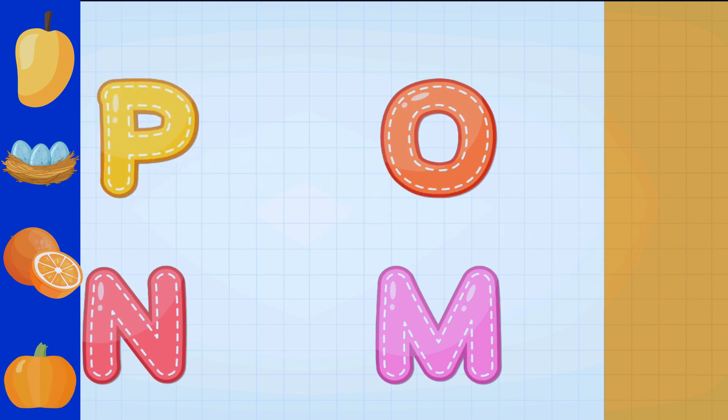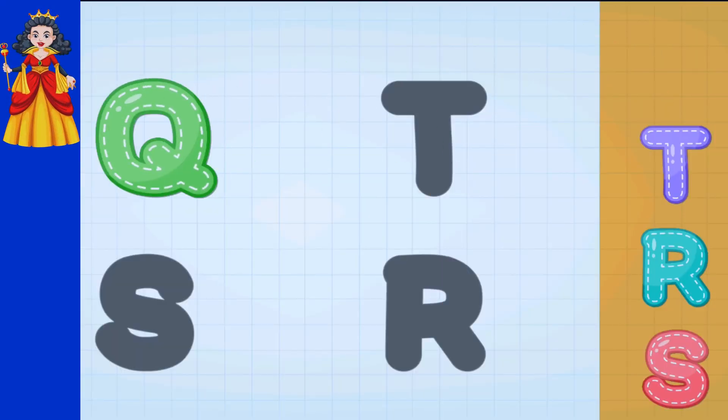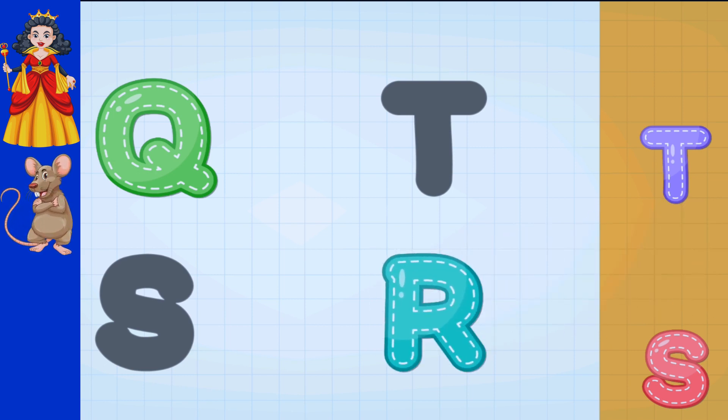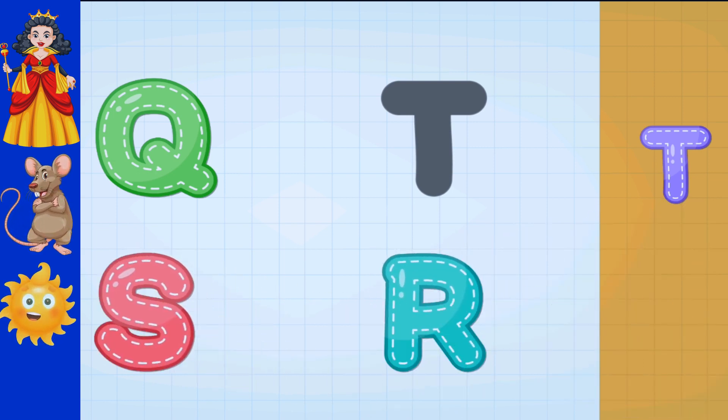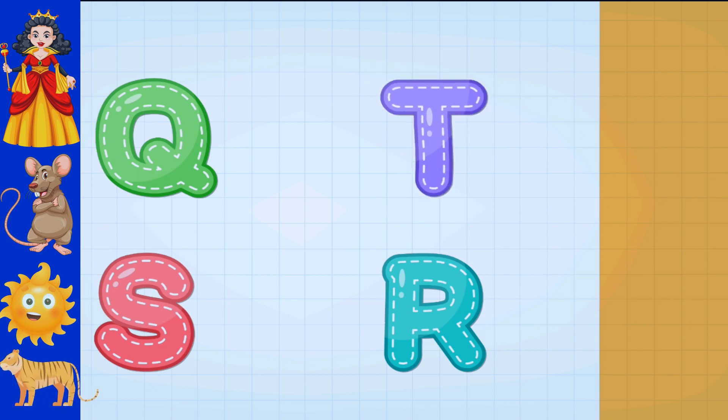P for Pumpkin, Q for Queen, R for Rat, S for Sun, T for Tiger.